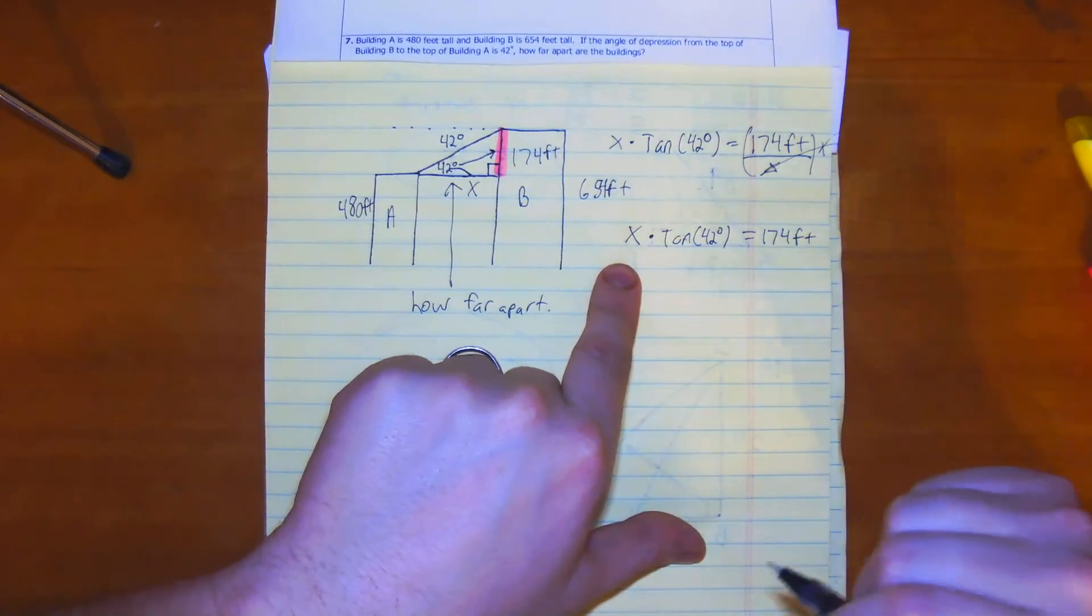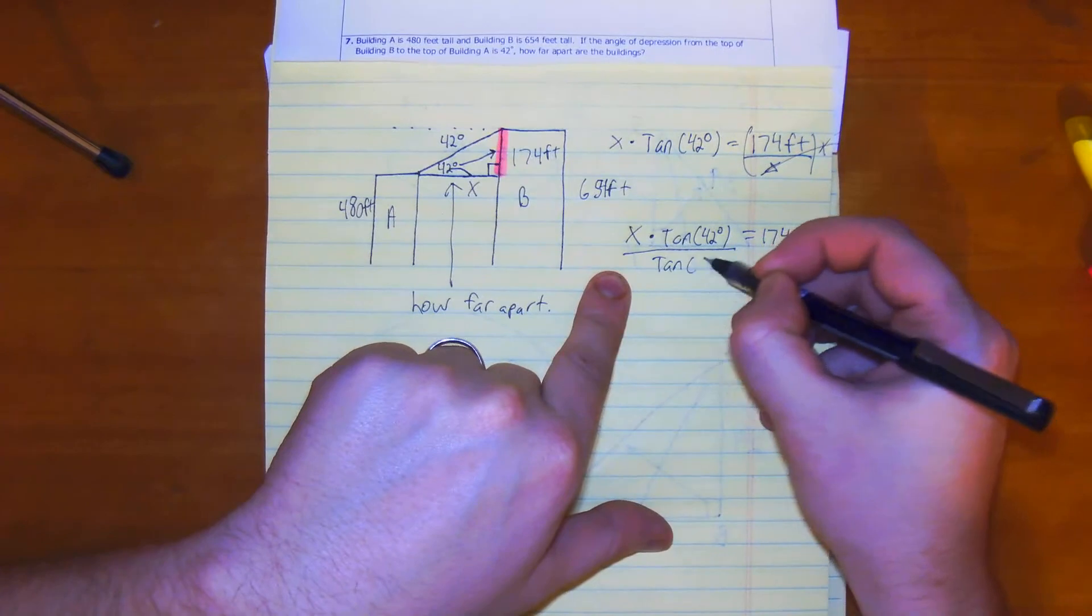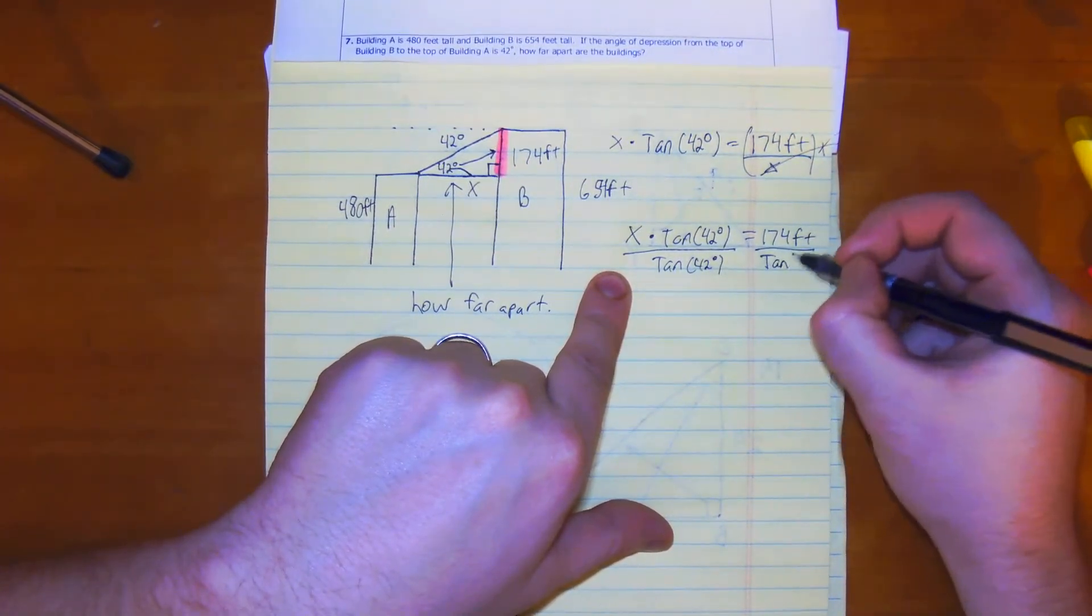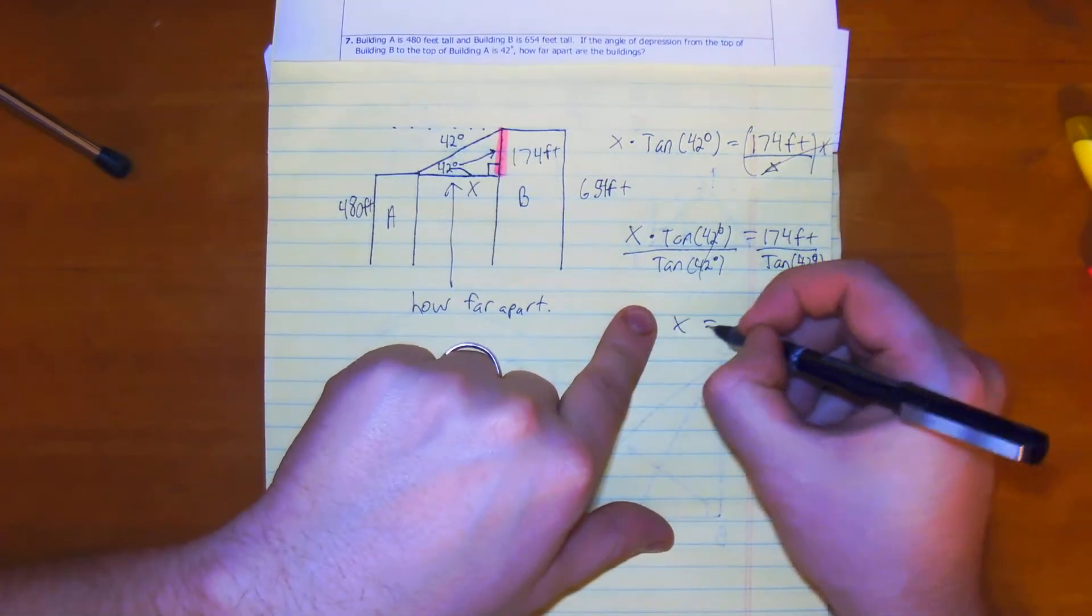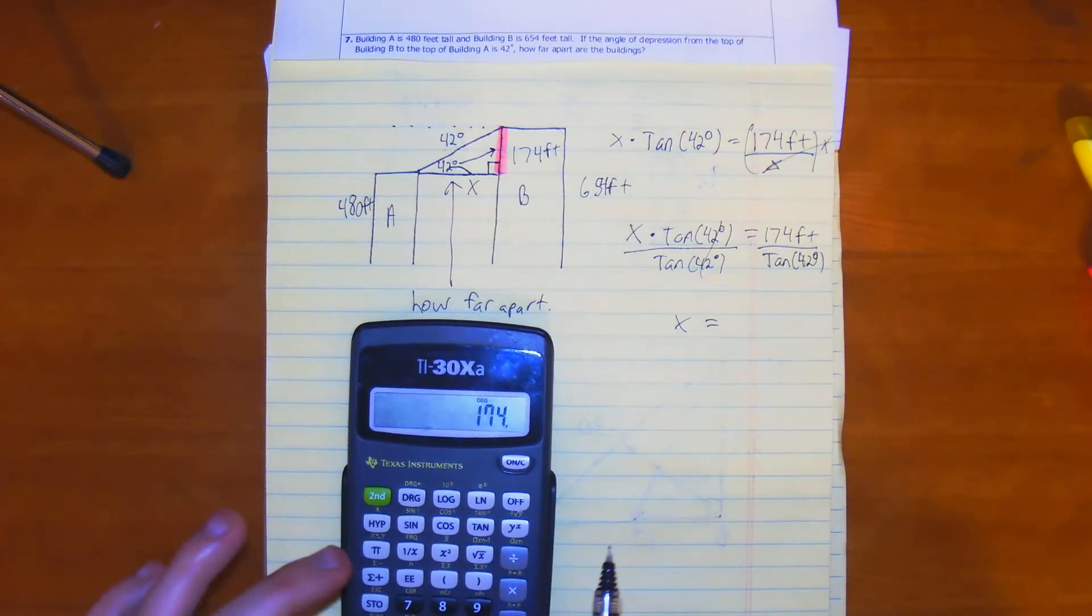To find the distance between the buildings, we divide by tan of 42. So x equals 174 divided by tan of 42.